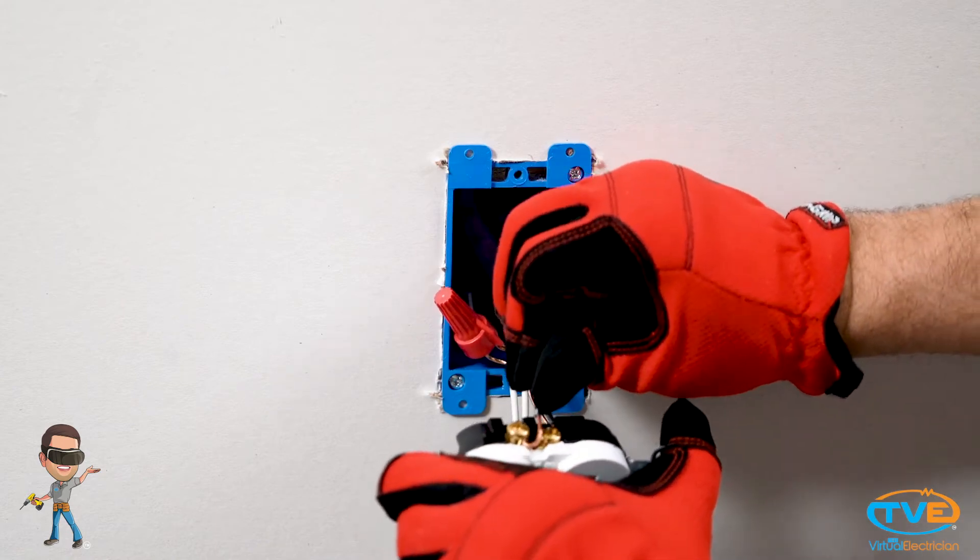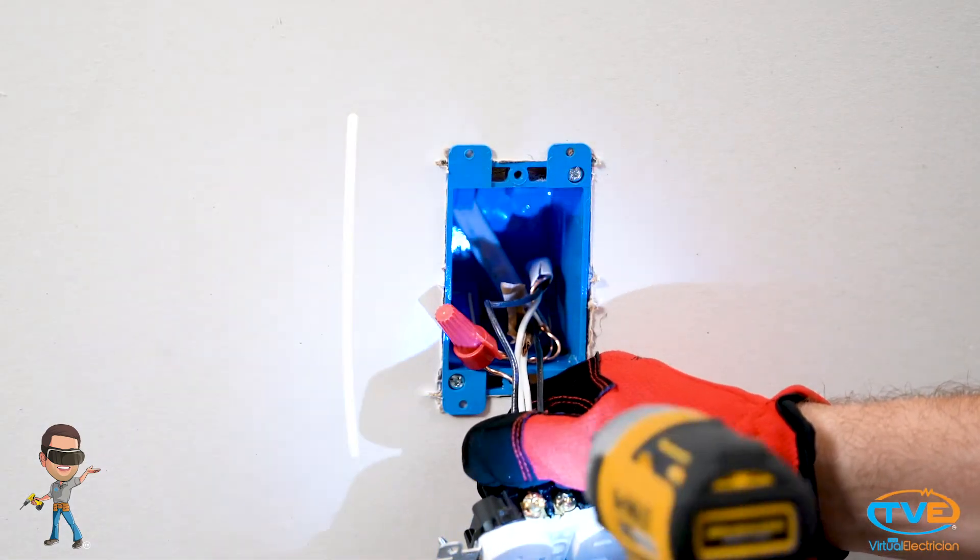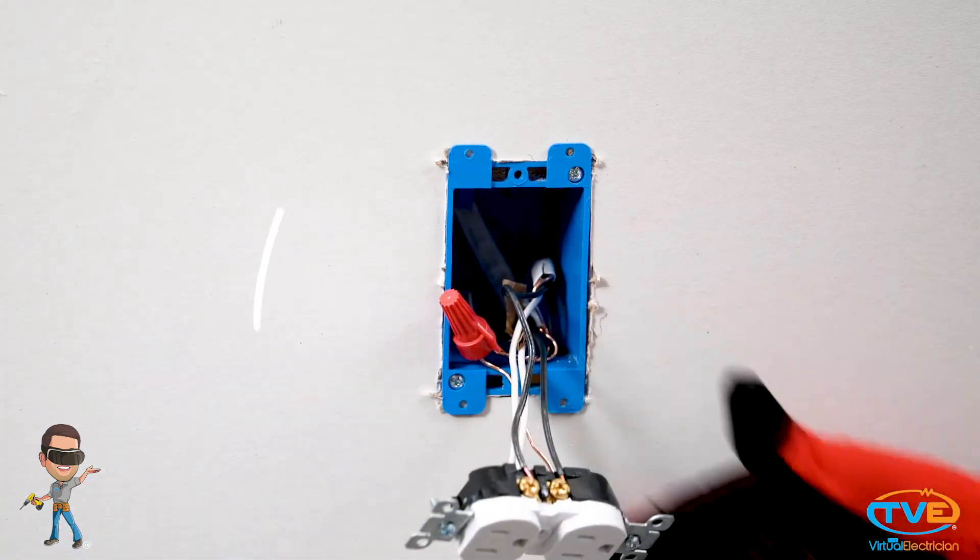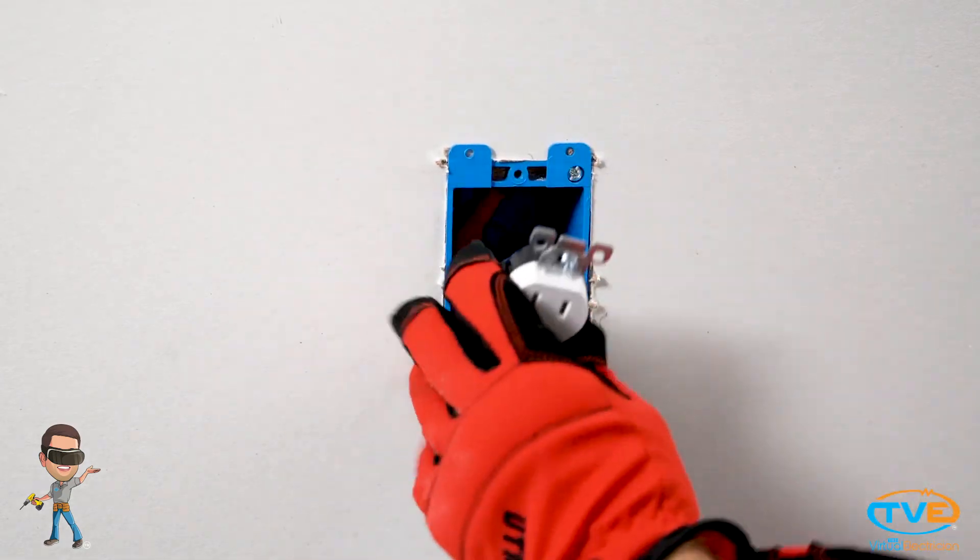Next, you want to install the hot wires, doing the same thing. This time, the loop will be facing up because you are on the other side and clockwise is this way. Again, it doesn't matter which screw you use.